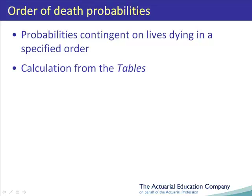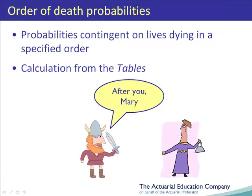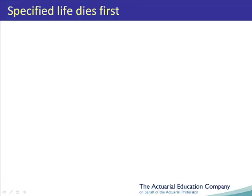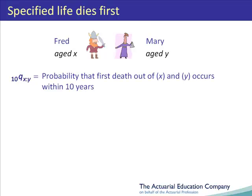In this unit we shall consider multiple life probabilities in which deaths are specified to occur in a particular order, and how these probabilities can be calculated. Fred is aged X and Mary is aged Y. Consider the probability that the first death out of Fred and Mary occurs within the next 10 years. This can be written as 10QXY, as we explained in the unit about joint life probabilities.